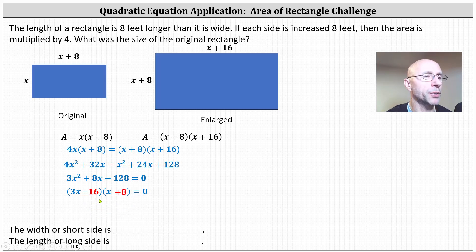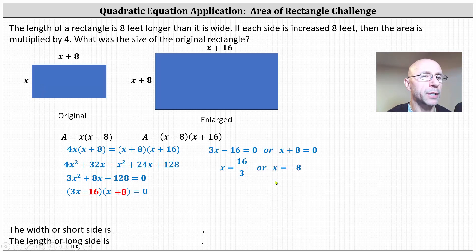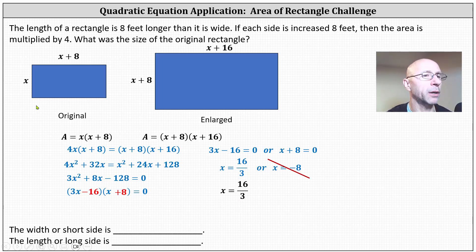The product on the left equals zero when 3x minus 16 equals zero, or x plus eight equals zero. To solve 3x minus 16 equals zero, we add 16 to both sides and divide by three, giving us x equals 16 thirds. For the second equation, we subtract eight on both sides, giving us x equals negative eight. But x is a length and cannot be negative, so we exclude x equals negative eight. Therefore x equals 16 thirds, and the width or shorter side of the original rectangle is 16 thirds feet.